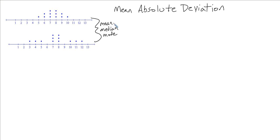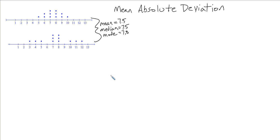The mean absolute deviation describes how the data relates to the mean. In this situation, the mean for both of these is 7.5, the median for both of these data sets is 7.5, and the mode — they have two modes, 7 and 8 — for both data sets.